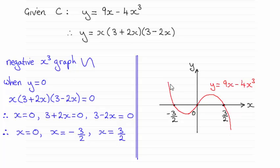And you can see the shape of the graph here and it crosses the x-axis at points where x is minus 3 over 2, 0, and 3 over 2.